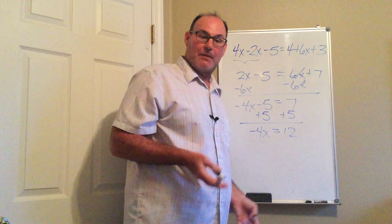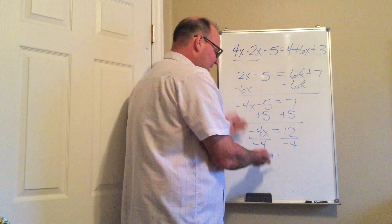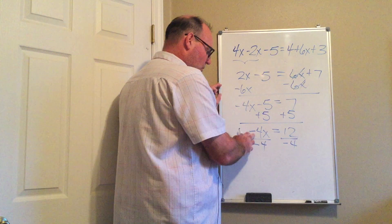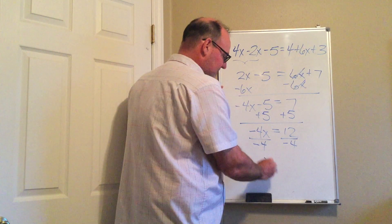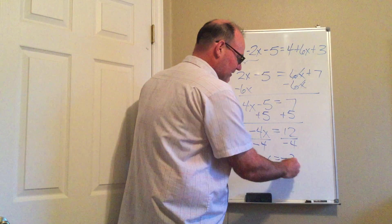And last but not least I'm going to get the x by itself by dividing. I always divide by exactly the coefficient in front of the x, you don't change it. So a negative 4 divided by a negative 4 becomes a positive x. A positive 12 divided by negative 4 is negative 3.